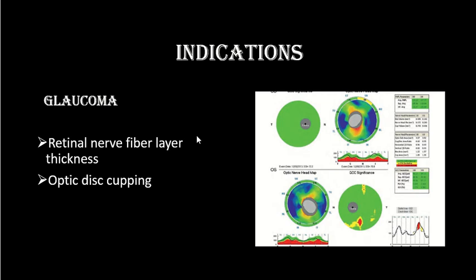In glaucoma, OCT measures the peripapillary retinal nerve fiber layer thickness in a 3.2 mm area around the disc. It also measures optic disc cupping. Results are color-coded: green is normal, yellow is borderline, and if the measurement line falls into the red area, it means there is increased disc cupping or significant retinal nerve fiber layer thickness reduction.